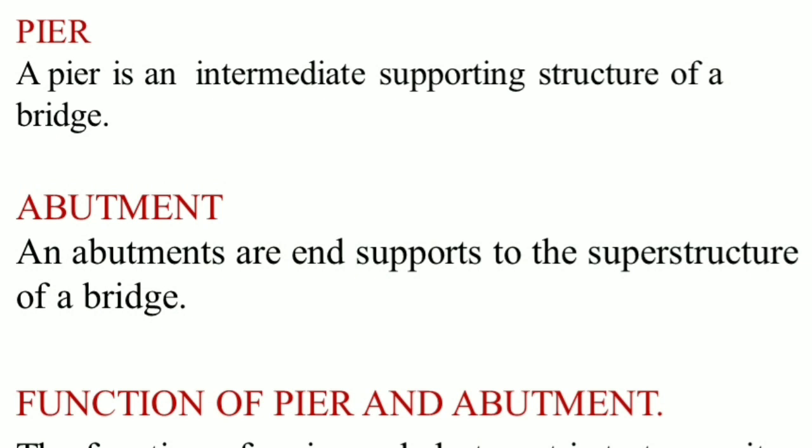Hi everyone. In this design of bridges discussion, we cover the topic: the difference between piers and abutments. A pier is an intermediate supporting structure of a bridge, whereas abutments are the end supporting structure of a bridge.